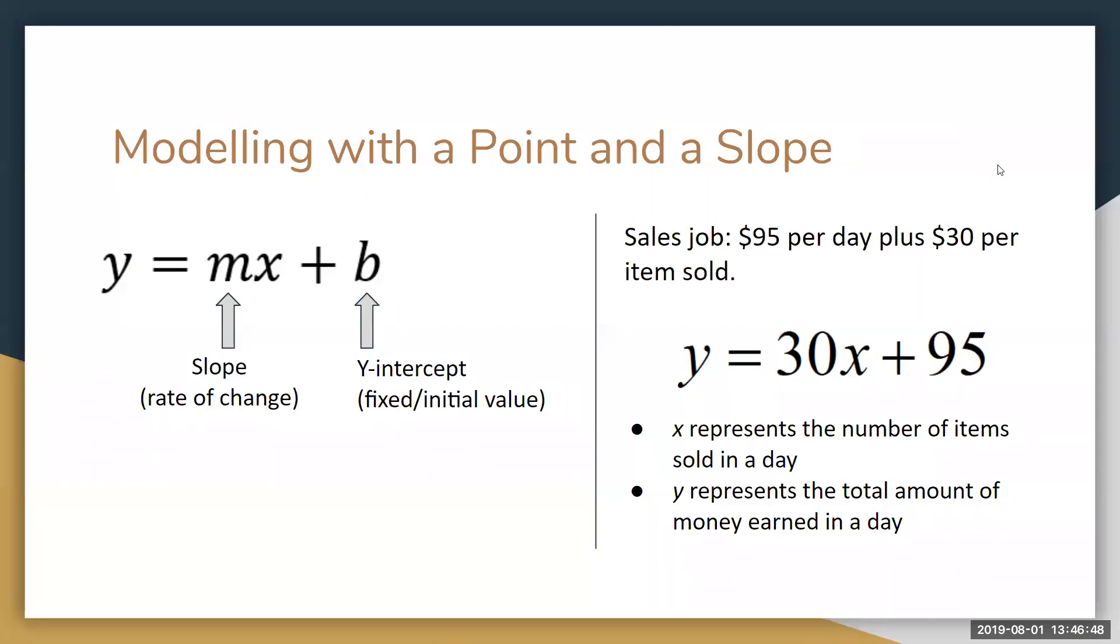Slope intercept form, or y equals mx plus b, is a great form of a linear equation because it involves two very important pieces of information: the slope, which we denote with the letter m, and the y-intercept, which we denote with the letter b.